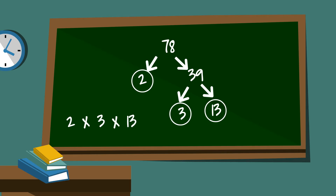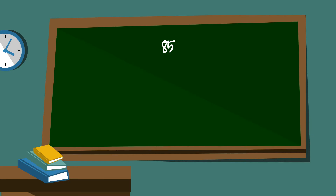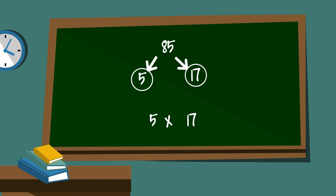Next example with a factor tree is 85. I know 5 will go into 85 — 5 times 17 is 85. I will circle both of these because they are prime. So the prime factorization of 85 is 5 times 17.